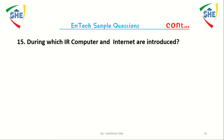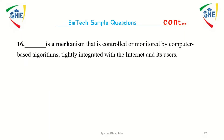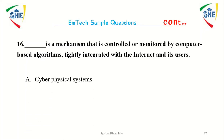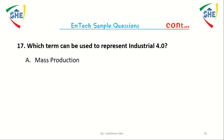During which industrial revolution were the computer and internet introduced? That is a mechanism that is controlled or monitored by a computer algorithm, integrated with the internet and its users. Which term can be used to represent industrial revolution 4.0?